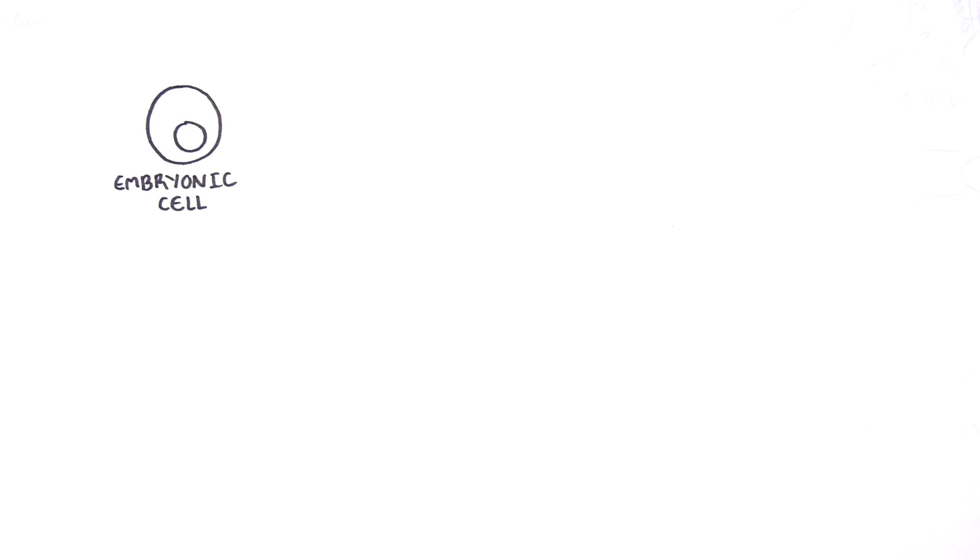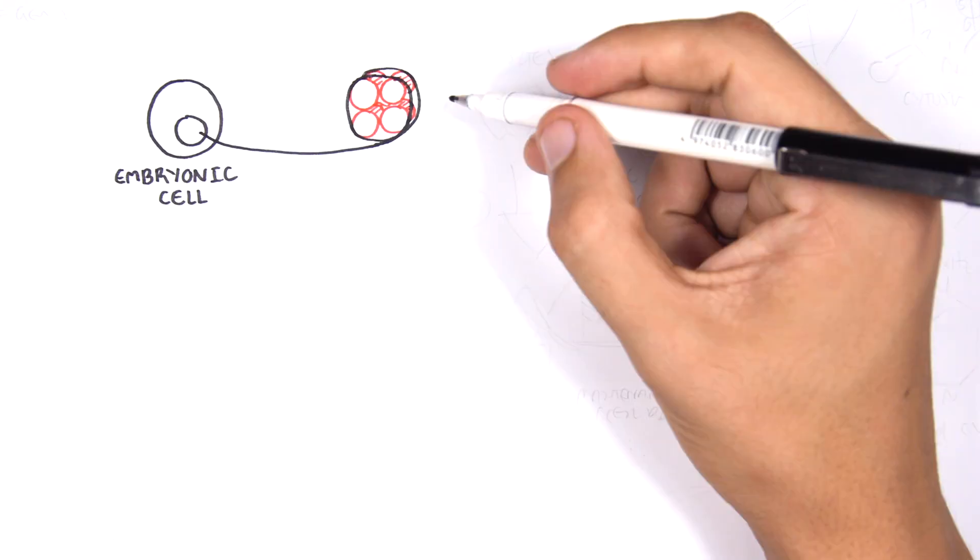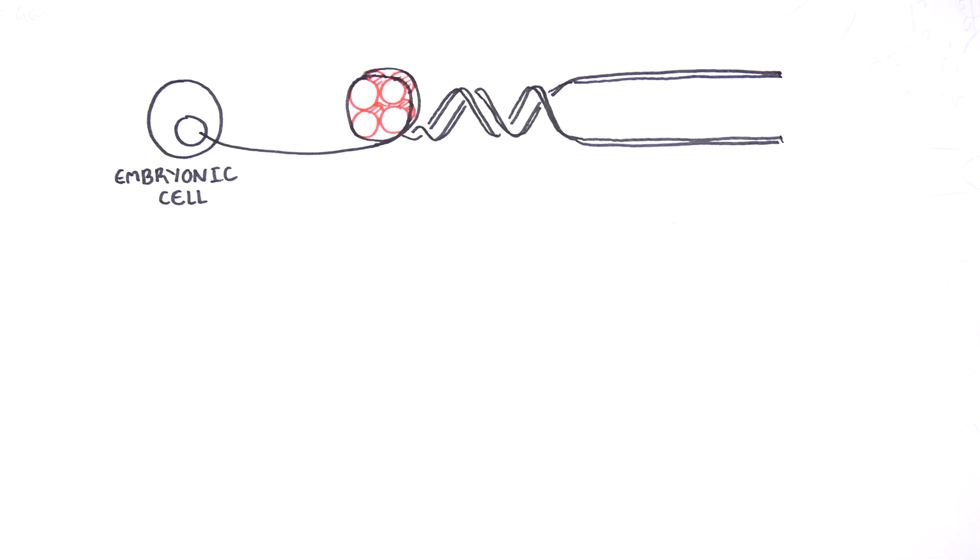Here we are looking at an early embryonic cell, and we are pulling out its DNA, which are wrapped around histone octomers known as nucleosomes.